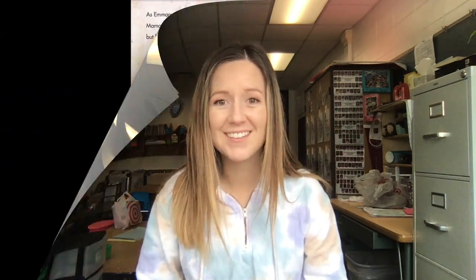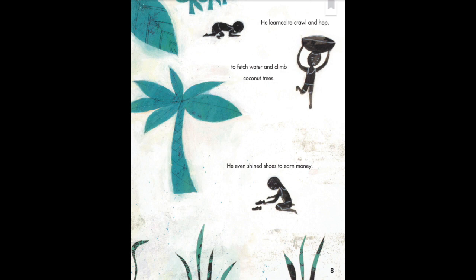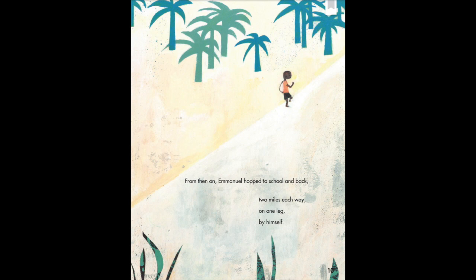Let's try it. Emanuel grew. Mama Comfort told him he could have anything, but he would have to get it for himself. He learned to crawl and hop, to fetch water and climb coconut trees. He even shined shoes to earn money. Most kids with disabilities could not go to school. Still, Emanuel's mother carried him there until one day she said, you're too heavy. From then on, Emanuel hopped to school and back, two miles each way, on one leg, by himself.